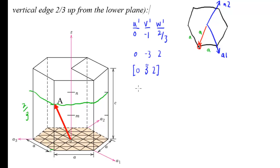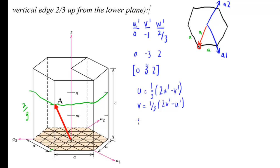That requires the use of these formulas. U equals one-third times (2U' minus V'), and V equals one-third times (2V' minus U'). T equals negative U plus V — notice this is U and V, not U prime or V prime, so we use the converted parameters. And finally, W is equal to W prime.